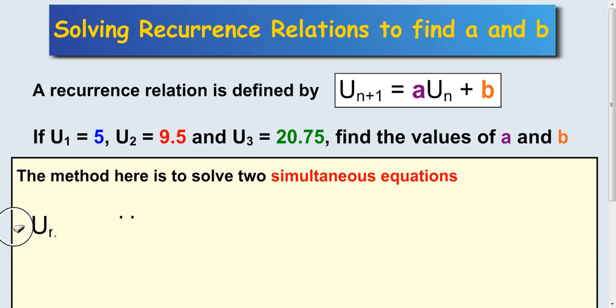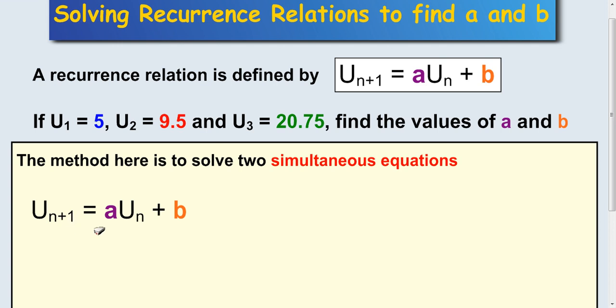For the first simultaneous equation, let's look at the recurrence relation. If we look at what u of 1 is, u of 1 is 5. That means u of n plus 1 would be u of 2 which is 9.5. So we can substitute these in.